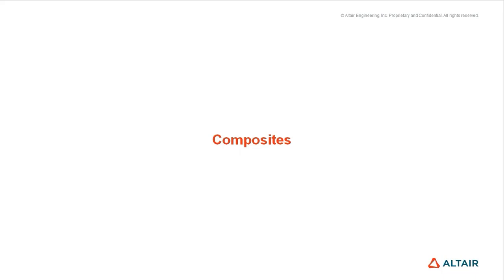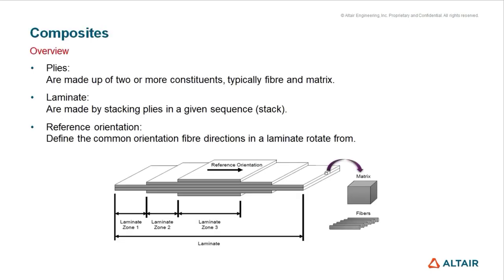Before we start modeling the composite plate, I would like to tell you a bit about composites. A composite material is produced from two or more constituent materials. A well-known example is fiber reinforced plastics. Basically, you put fibers and matrix together to form a ply. If you put more than one ply on top of each other, you form a laminate. And if you put plies with an angle to each other, you also have to consider a reference orientation.